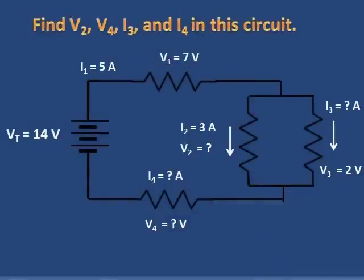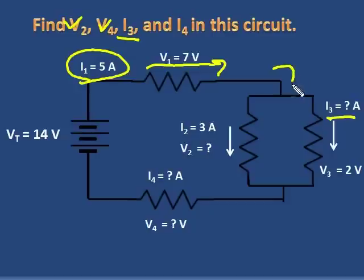Well, we've found V2, V4. Now let's look at I3. And we see that I3 is in that arm of this parallel section. Okay? Now, if five amps comes in, and we look at this parallel section, and three amps goes through this arm,